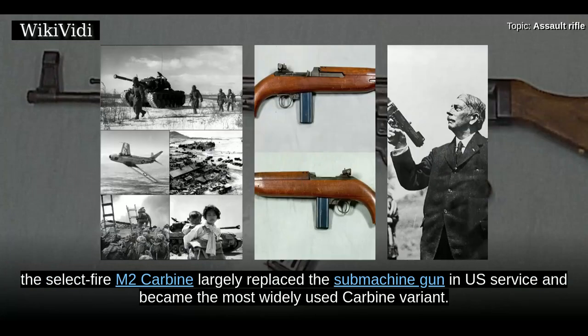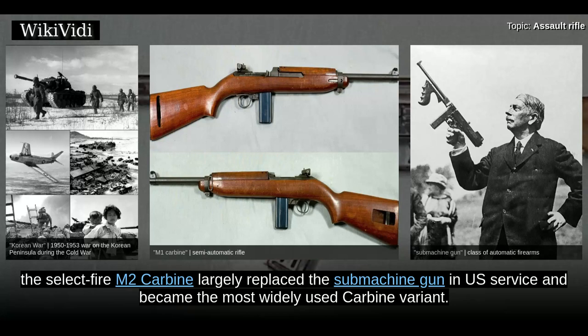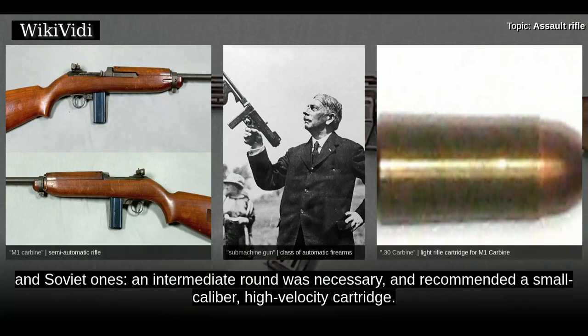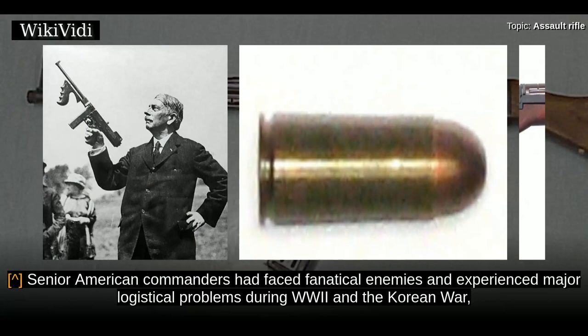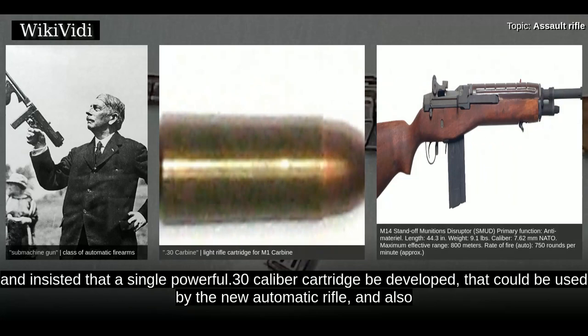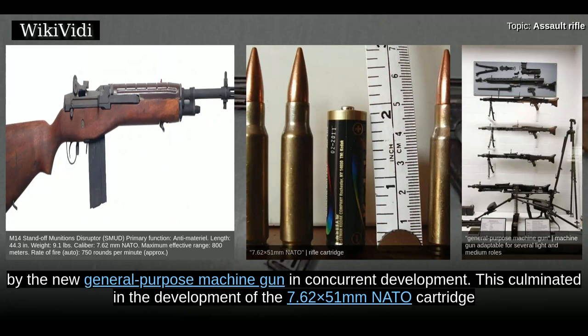During the Korean War, the select-fire M2 Carbine largely replaced the submachine gun in US service and became the most widely used carbine variant. Combat experience suggested that the .30 Carbine round was underpowered. American weapons designers reached the same conclusion as the German and Soviet ones: an intermediate round was necessary, and recommended a small caliber, high-velocity cartridge. However, senior American commanders insisted that a single powerful .30 caliber cartridge be developed that could be used by the new automatic rifle and also by the new general-purpose machine gun, with the U.S. 7.62×51mm in concurrent development.